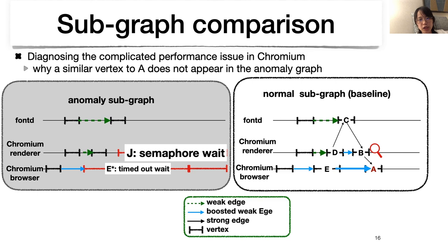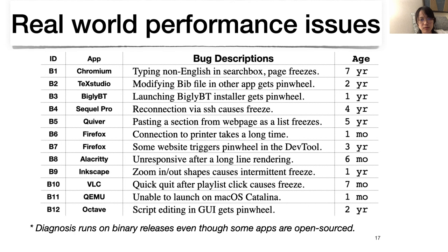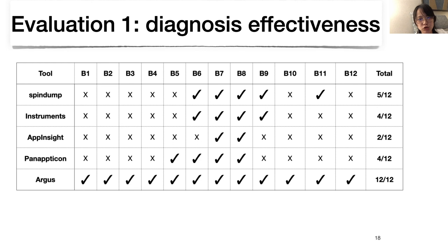We evaluate the effectiveness of Argus with 12 real-world performance bugs from well-known apps, with ground truths unknown to us before evaluation. Although some apps have source code available, all diagnosis runs on binary releases and developers do not need to modify their code. Root causes are verified with dynamic patches or confirmed by developers. We compare Argus with traditional tools like SpinDump and Instruments, and also with state-of-the-art causal tracing tools like AppInsight and PerfScope. Argus successfully diagnoses all cases while other tools fail on complex performance issues. We also successfully submitted a patch to fix one of them.